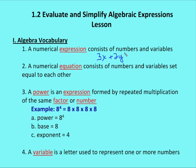A numerical equation consists of numbers and variables set equal to each other. So we might have something like 3x plus 2y equals 9, or we could have 3x plus 2y is equal to 3 plus 4y. In an expression, you don't have an equal sign. In an equation, you have an equal sign with numbers and variables set equal to each other.